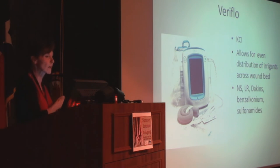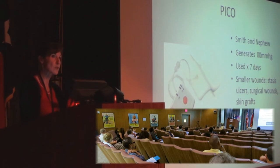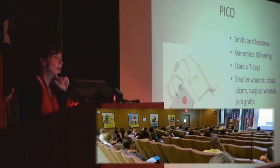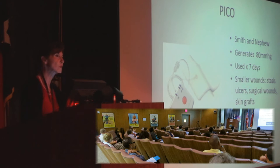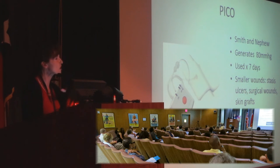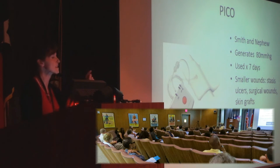The Veriflo is a KCI product that allows both negative pressure wound therapy and irrigation of the wound — great for wounds with infection where you want to aggressively irrigate. You can use normal saline, lactated Ringers, Dakin's, or benzalkonium chloride. The PICO system by Smith & Nephew is good for small wounds in outpatient settings and clinics — it can be used for up to seven days, generates about 80 mmHg of pressure, and is smaller than a pack of cards, portable and user-friendly.